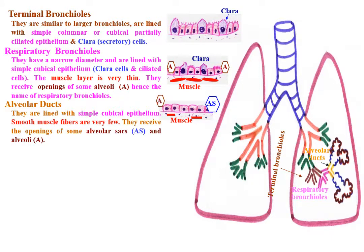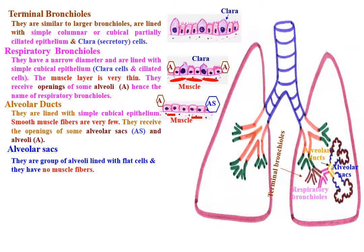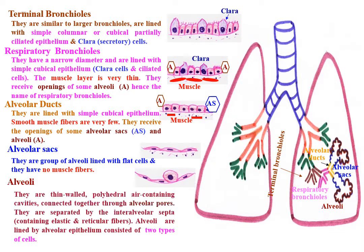Alveolar sacs are groups of alveoli lined with flat cells and have no muscle fibers. Alveoli are thin-walled, polyhedral, air-containing cavities lined with alveolar epithelium.